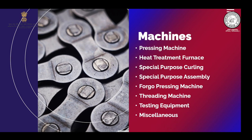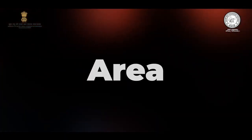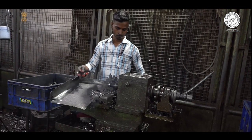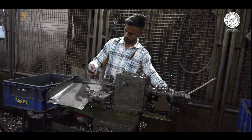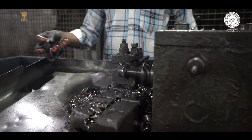जिन machines की मदद से manufacturing की जाती है वो हैं: pressing machine, heat treatment furnace, special purpose curling machine, special purpose assembly machine, forging pressing machine, threading machine, testing equipment और miscellaneous उपकरण। इस पूरे plant को run करने के लिए आपको लगभग 5000-6000 square feet एरिया की आवश्यकता होगी, जिसमें raw material storage से लेकर production और packaging का एरिया भी include होता है।